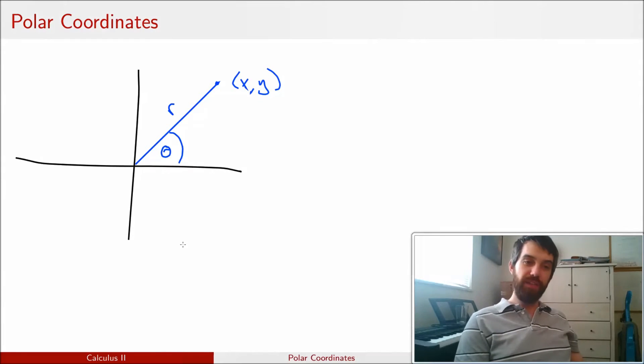In fact, the polar coordinates and the Cartesian coordinates are related. For instance, if I know what the R and the theta is, this forms a triangle. And so, I can actually tell you what the X and the Y is.